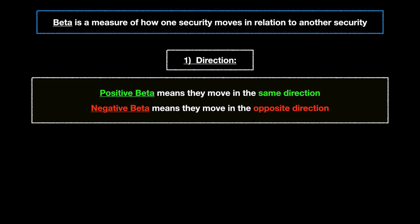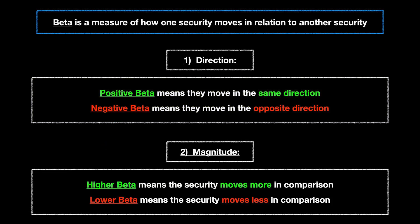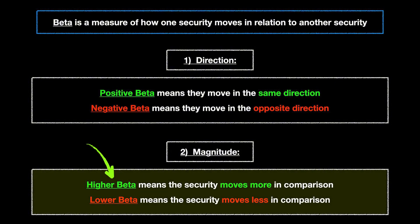Beta is measuring two factors. First is direction: positive beta values mean the securities move in the same direction, and negative beta values mean they move in opposite directions. Second, beta measures magnitude. A higher beta value means the security moves more in relation to the comparison security, and lower beta values mean it moves less.